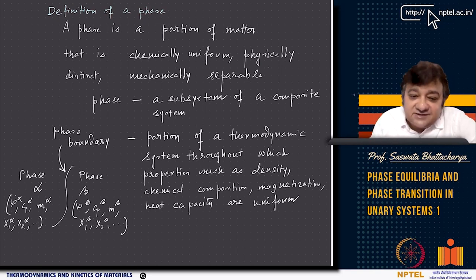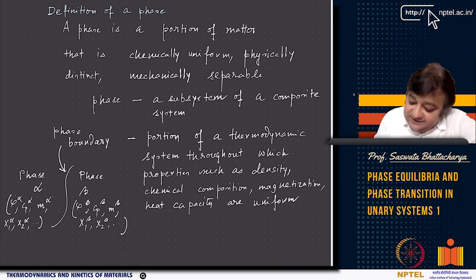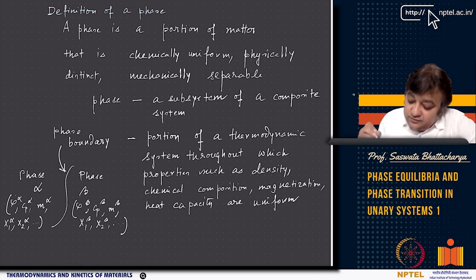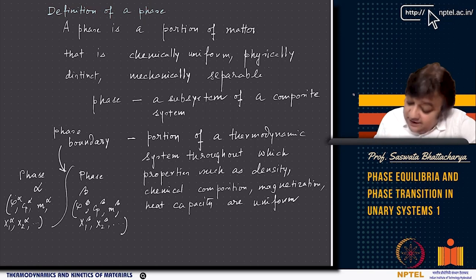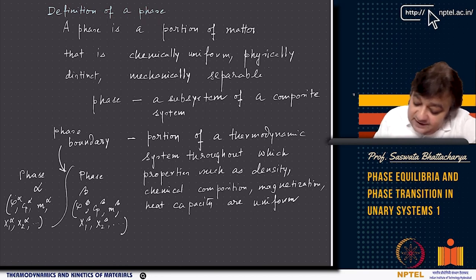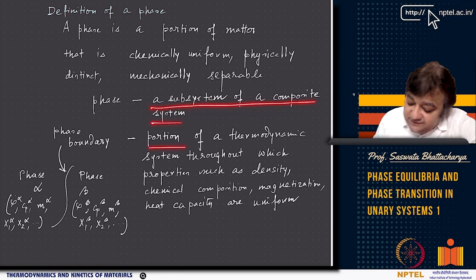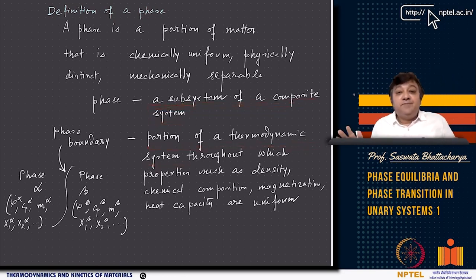Basically, you can think of phase as a subsystem. Another definition: phase is a portion of a thermodynamic system. With these ideas — phase as a subsystem of a composite system or portion of a thermodynamic system — you can immediately identify the concepts for thermodynamic equilibrium given in terms of subsystems of a composite system.